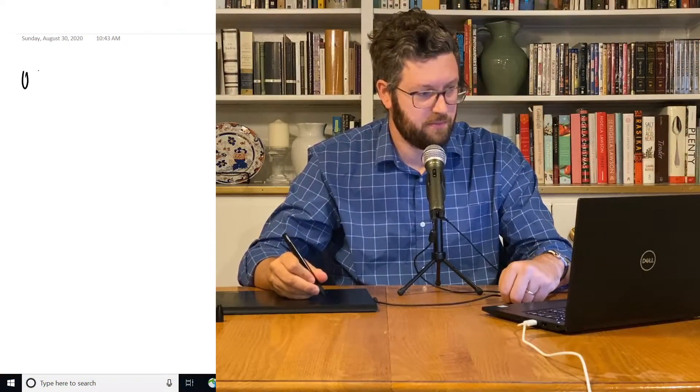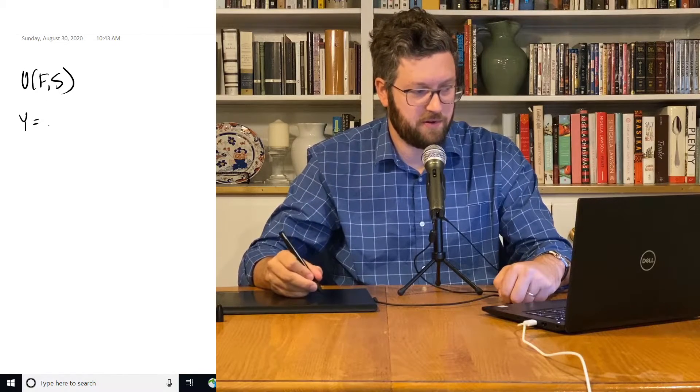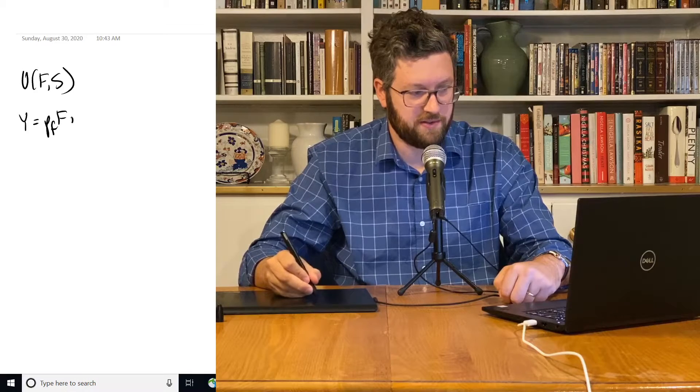Okay, so what's the Lagrangian method? Well, let's dive in with an example. Suppose we've got a utility function over food and shelter, and we've got an income constraint like so.